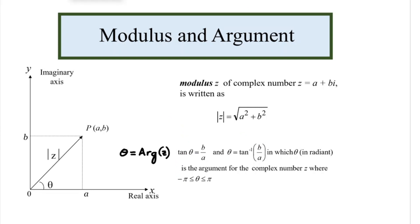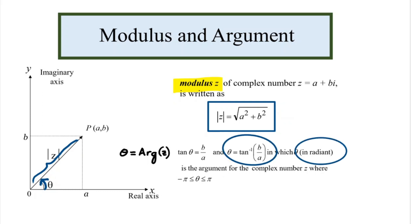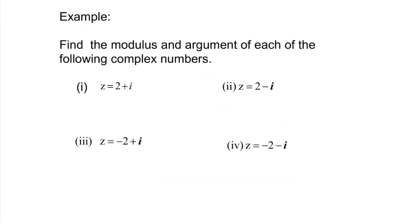Modulus and argument. The modulus of a complex number z is given by √(a² + b²), measuring the distance from the origin to point P. The argument measures the angle from the x-axis to the line OP. The formula for argument is θ = arctan(b/a). The value of the argument depends on which quadrant the complex number is located in on the Argand diagram.